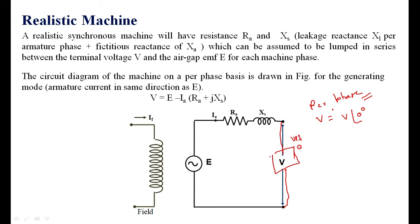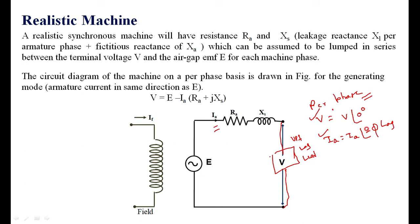If the load has a different power factor depending upon its nature, it may be UPF, lagging, or leading. In general, the current Ia — that is the current which is flowing — can be represented as Ia at an angle of minus phi if it is lagging, or Ia at an angle of plus phi if it is leading, and phi equals 0 for unity power factor. V is taken as reference, and Ia is expressed with its power factor angle. Ra is the given resistance value and Jx is the reactance. Therefore modifying the equation for E: V equals E minus Ia times (Ra plus Jx).